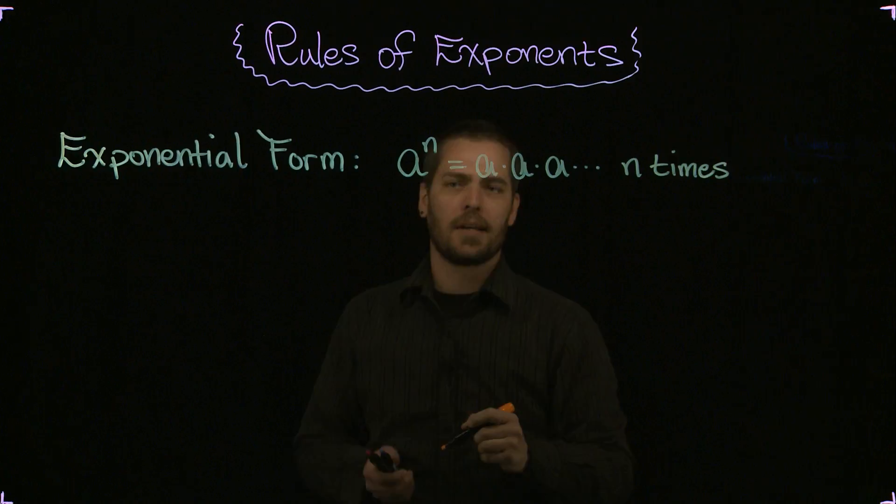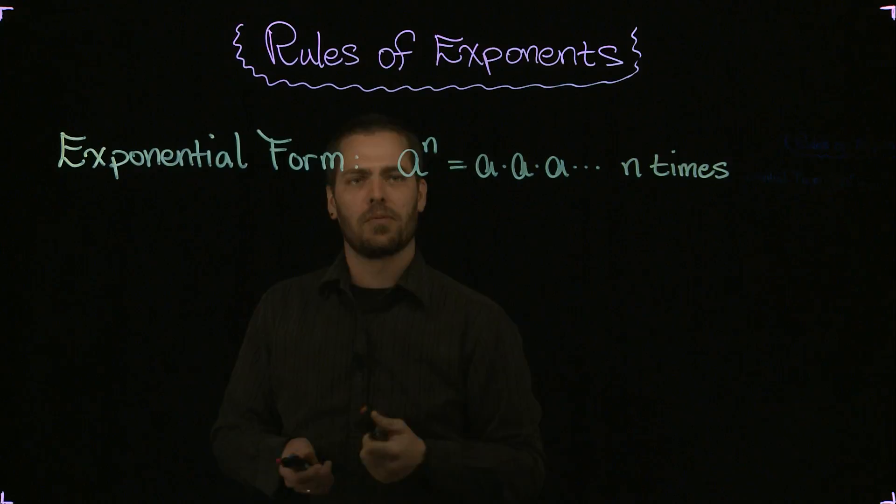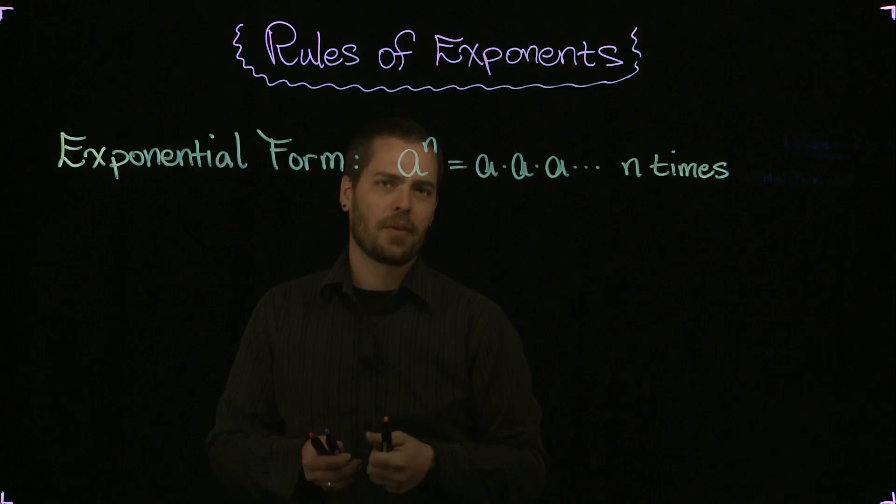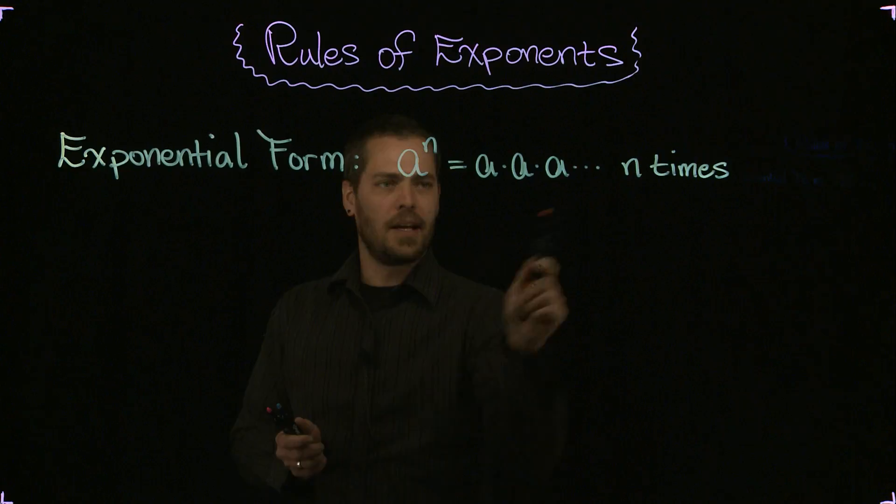So it's a repeated product, and this product is repeated the number of times shown by that superscript there. We say a to the n power, or a with an exponent of n, gives us a times a times a, and that just keeps going n number of times.